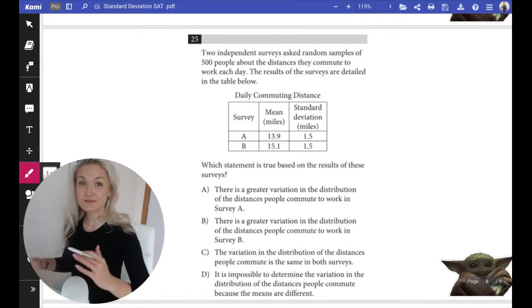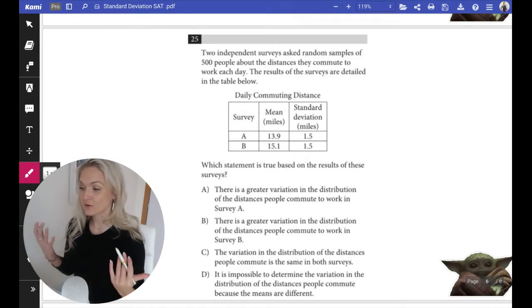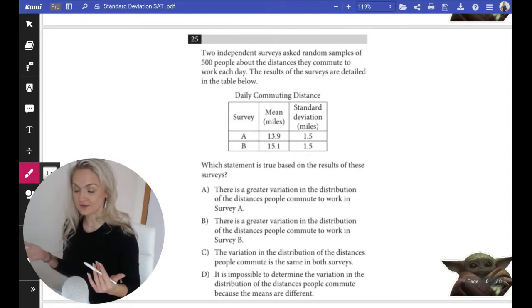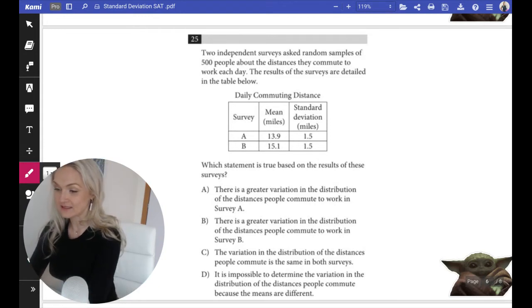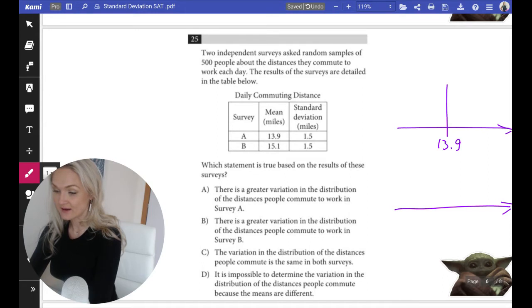All right, so you're given two sets—two surveys. For one, the mean is 13.9, and for another, the mean is 15.1, but the standard deviation is the same. What does that mean? If we were to graph these sets, for one the mean would be 13.9, for another 15.1. Since the standard deviation is the same, within one standard deviation we're going to add 1.5 and subtract 1.5.